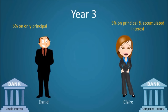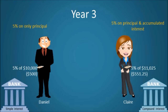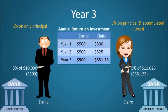In year three, Daniel once again makes $500, or five percent of his principal investment of $10,000 with simple interest, bringing his total capital to $11,500. Claire, on the other hand, will make five percent of $11,025 in year three, for an annual return of $551.25, bringing her total capital to $11,576.25. So after only two years of compounding, Claire has made $76.25 more than Daniel, all due to compound interest.